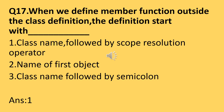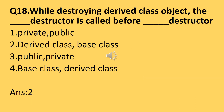Question number eighteen: while destroying a derived class object, which destructor is called first? The answer is: derived class destructor first, then base class destructor. A destructor is used to destroy any class object. When a program or block exits, the compiler implicitly calls the destructor to clean up storage that is no longer accessible. When destroying a derived class object, the derived class destructor is called first.